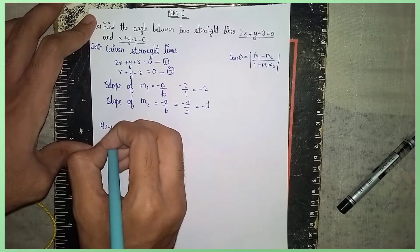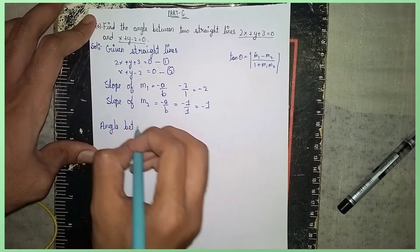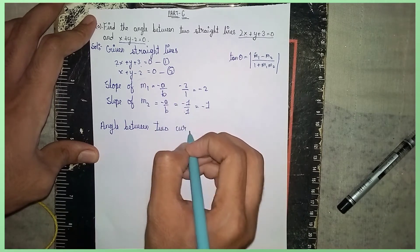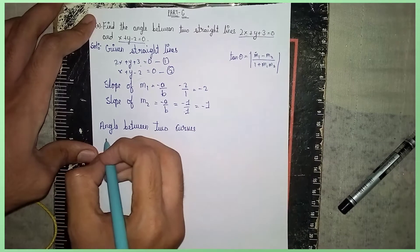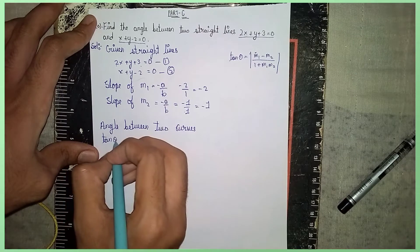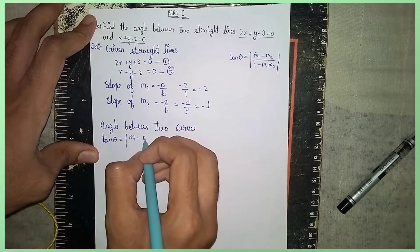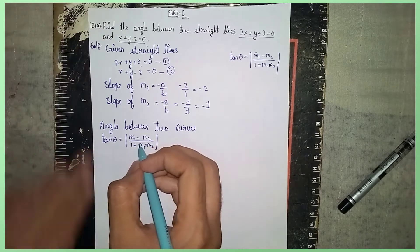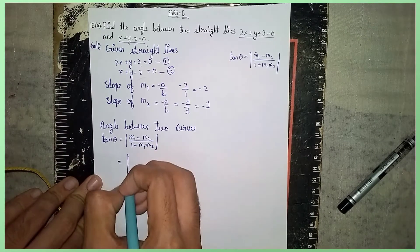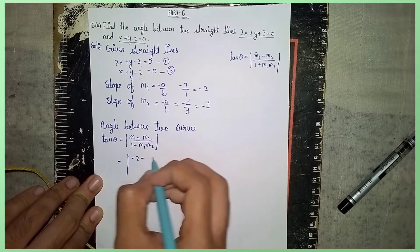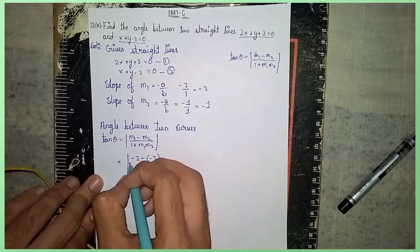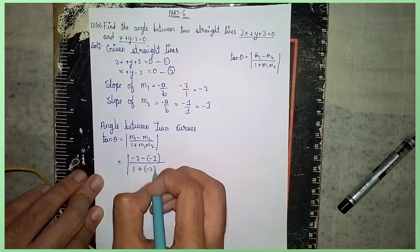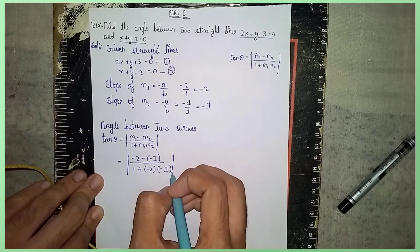Now applying the formula for the angle between two lines: tan theta equals under mod m1 minus m2 by one plus m1 into m2. Substituting the values: under mod minus 2 minus minus 1, in the numerator, divided by one plus minus 2 into minus 1.